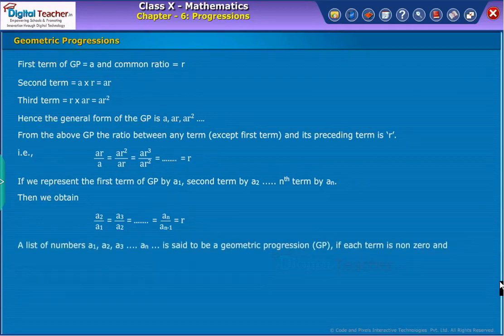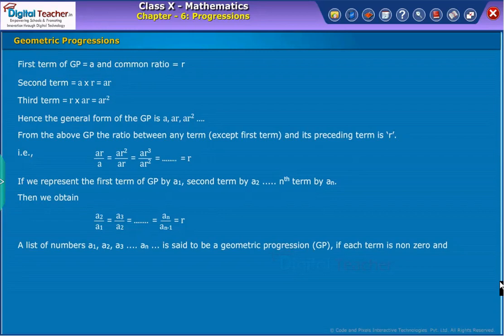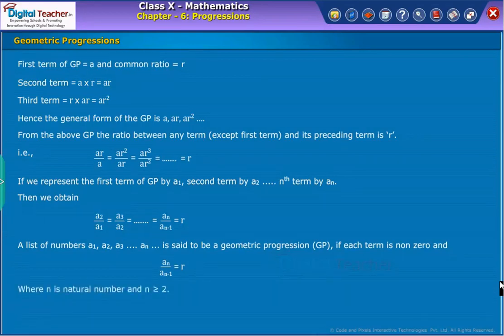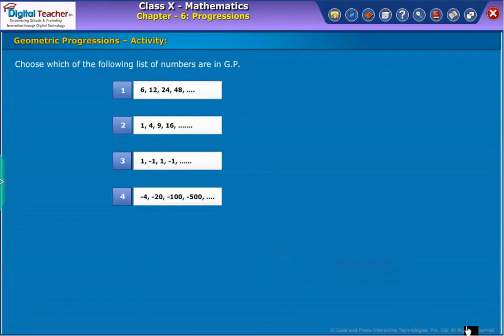A list of numbers A1, A2, A3, so on up to AN is said to be a geometric progression GP if each term is non-zero and AN by AN minus 1 equal to R, where n is natural number and n greater than or equal to 2. Let us do an activity. Choose which of the following list of numbers are in GP.